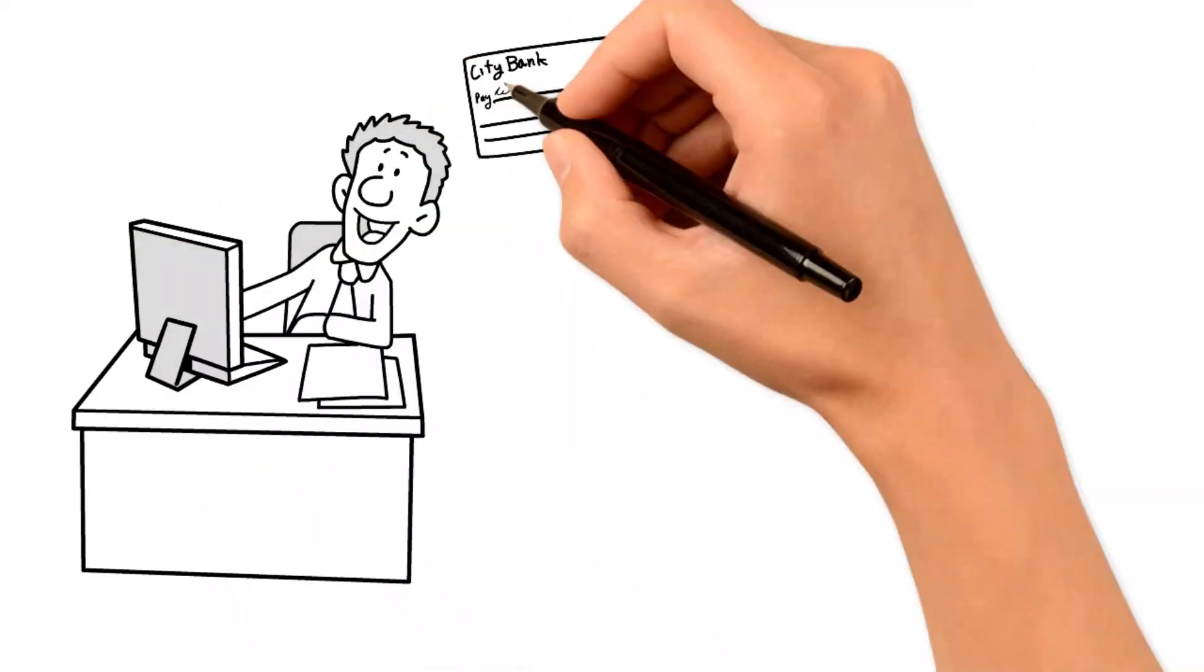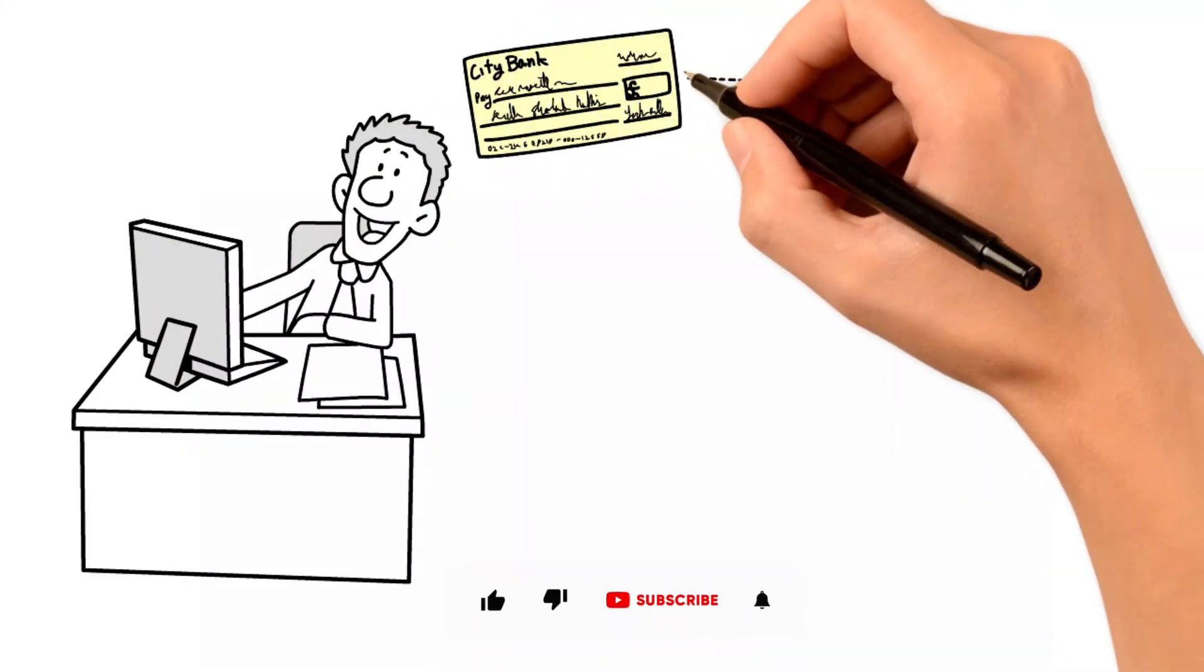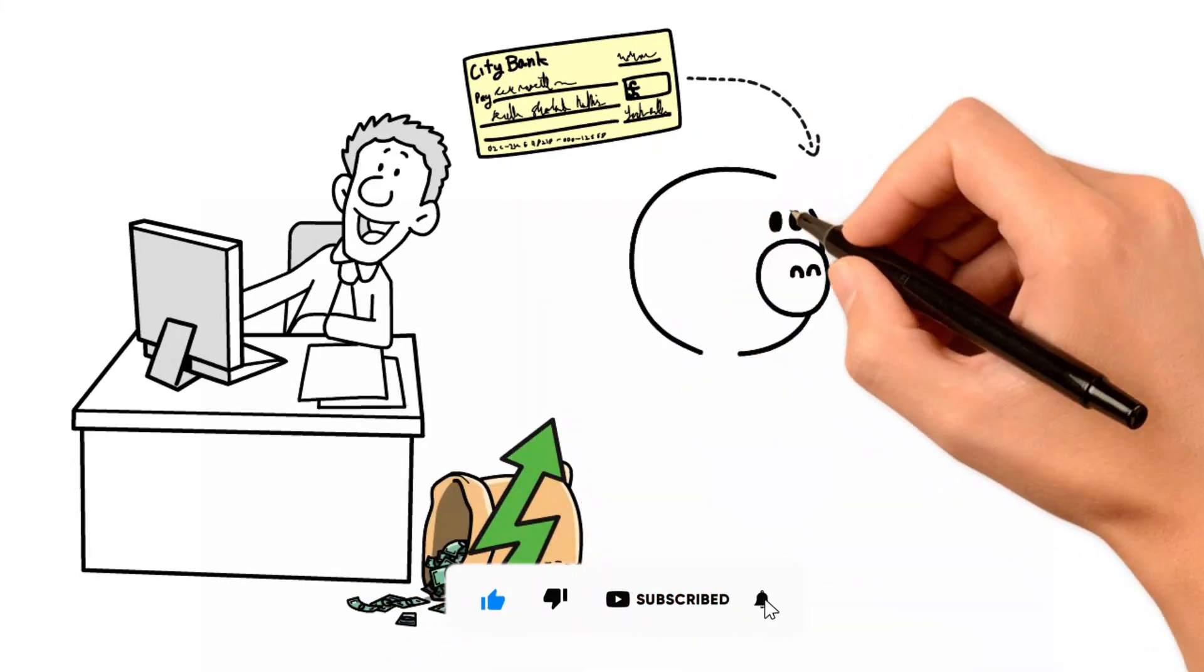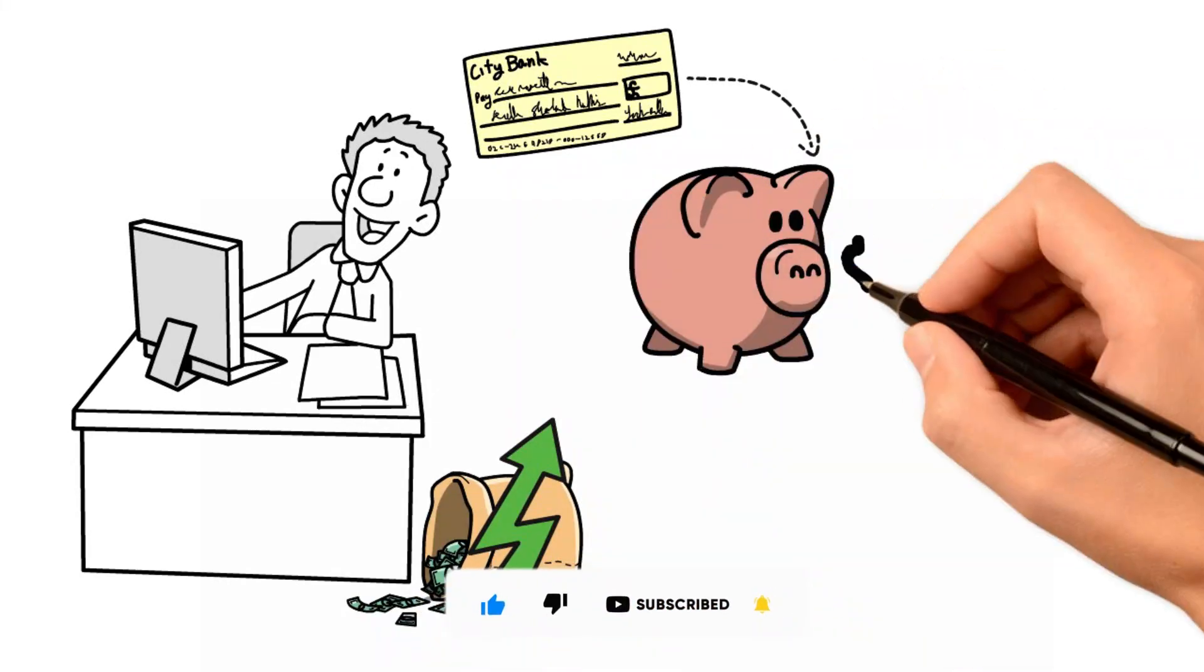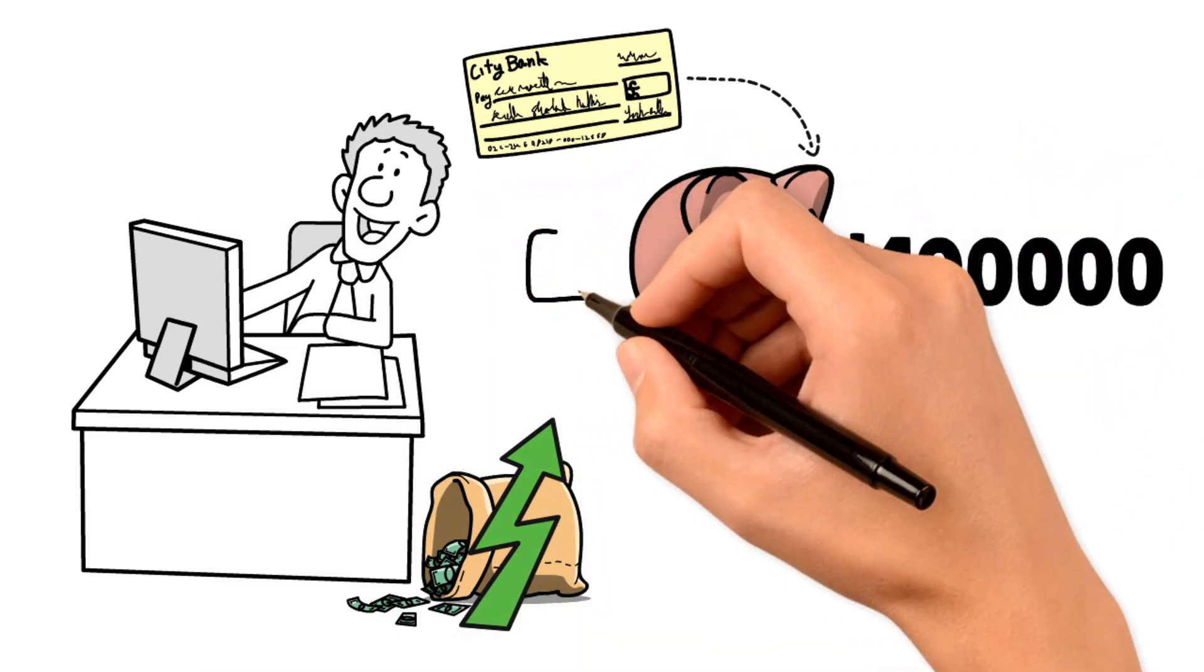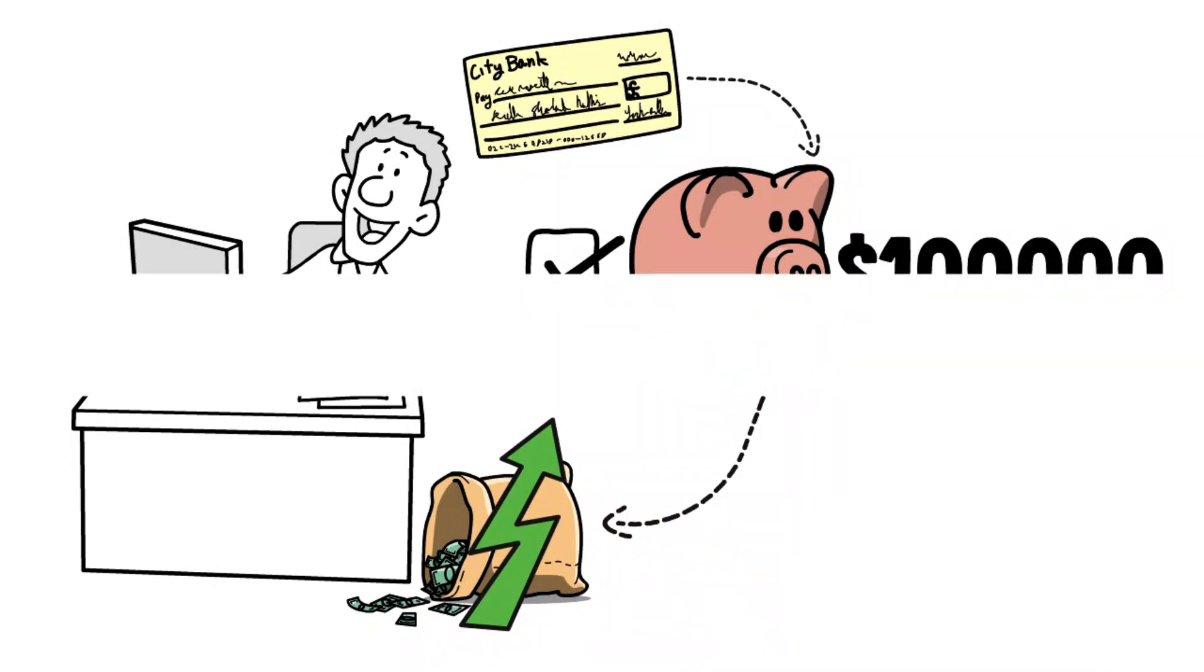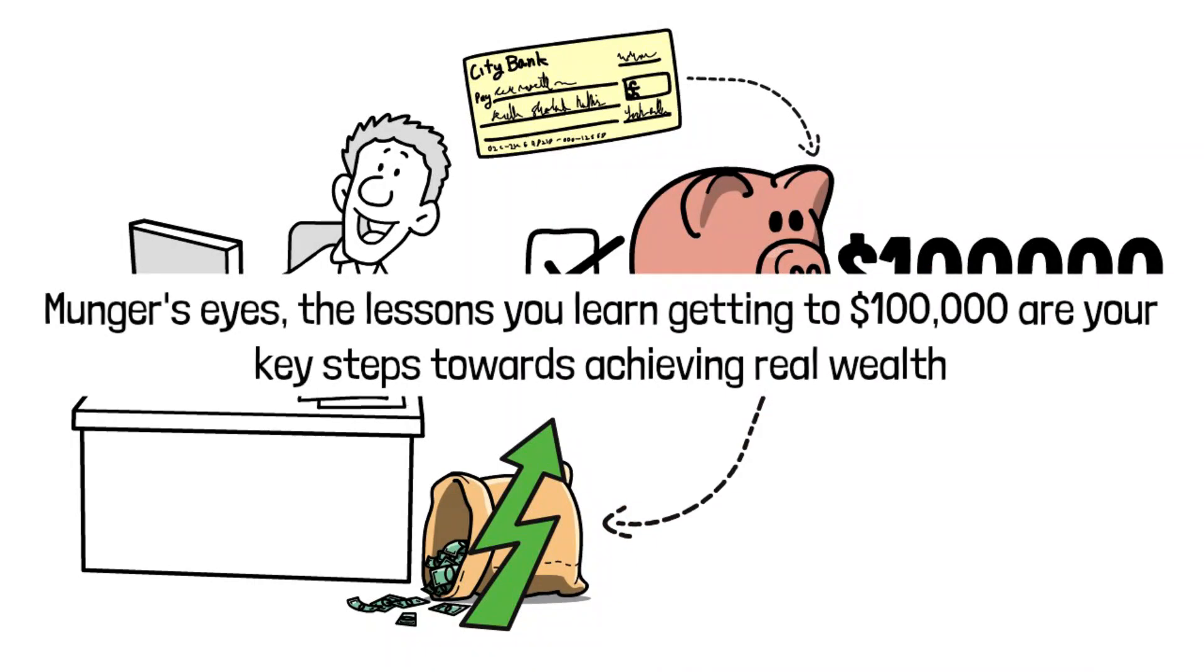The magic really happens when you keep these habits over time. It's not just about your money growing, but you as a person too. By tackling this first big money goal, you're setting yourself up for success in handling and growing even more money later on. In Munger's eyes, the lessons you learn getting to $100,000 are your key steps toward achieving real wealth.